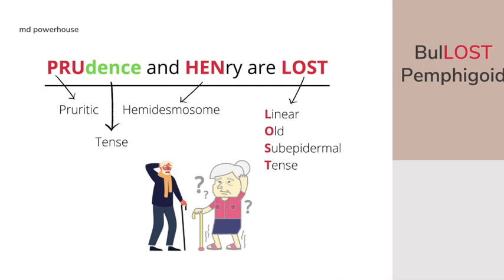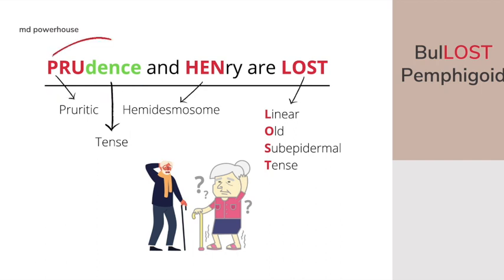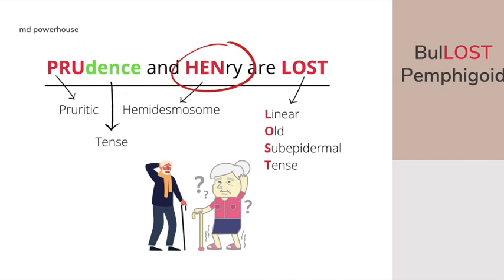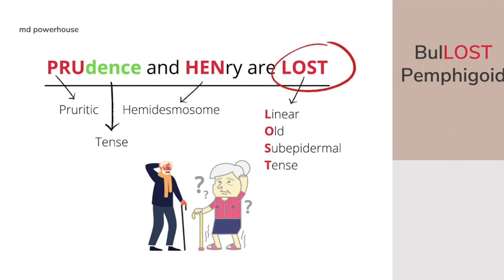So let's say it again: Prudence and Henry are lost. Pru — pruritic. Tense — tense bullae. Henry sounds like hemi — the hemidesmosomes are affected. L — linear. O — old. S — sub-epidermal. T — tense. So you can pause the video right here and really try to remember what everything stands for.